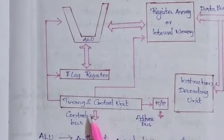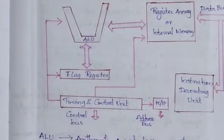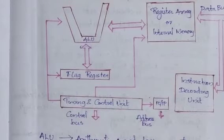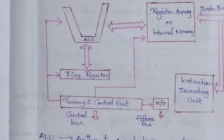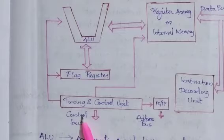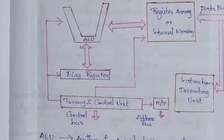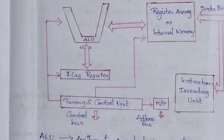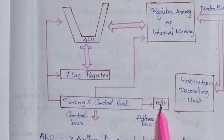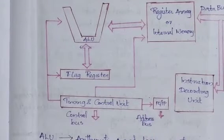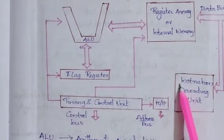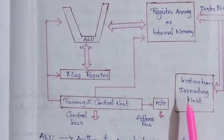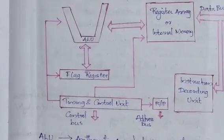The timing and control unit generates the necessary timing and control signals for the internal and external operations of the microprocessor. The PC or IP — program counter or instruction pointer — stores the address of the next instruction to be executed. The instruction decoding unit decodes the instructions.